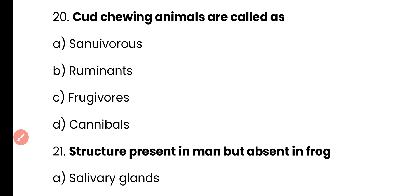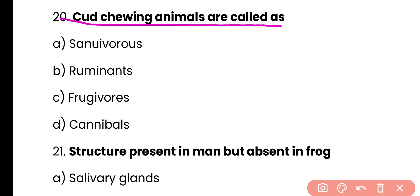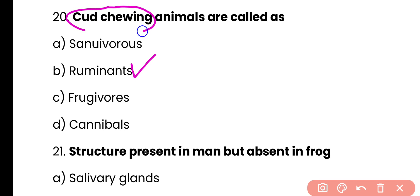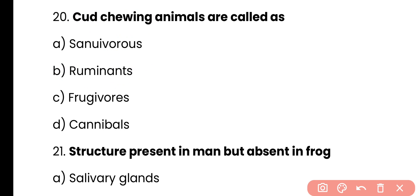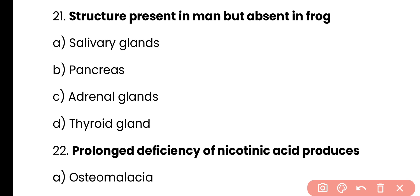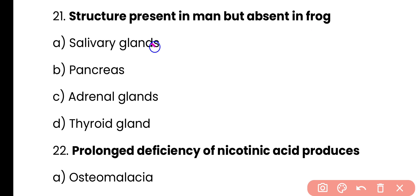Question 20: Cud-chewing animals are called — sanguivores, ruminants, frugivores, or cannibals. Correct answer is option B — cud is a type of food that returns from the stomach to the mouth for the chewing process again; cud-chewing animals are called ruminants, like cattle. Question 21: Structure present in humans but absent in frogs — salivary glands, pancreas, adrenal glands, or thyroid gland. Correct answer is option A — salivary glands are present in humans but absent in frogs.